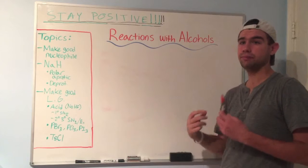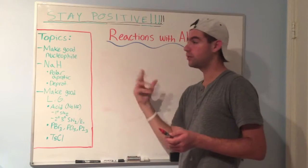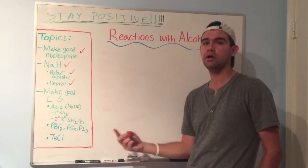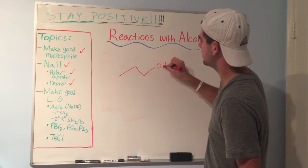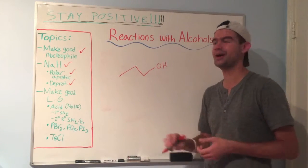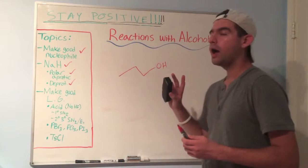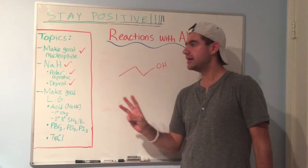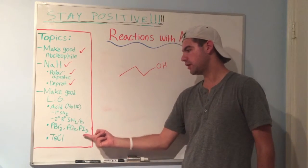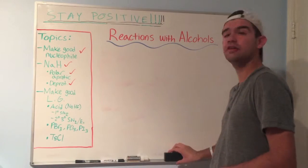Now I want to talk about the second method for making those really happy alcohols reactive. The first method was making them a good nucleophile — we're good with that. Now let's talk about making an alcohol into a good leaving group. We said that an alcohol is a terrible leaving group because if it leaves, it just forms hydroxide, which is an extremely strong base — so that's not going to happen in nature. For your class, you'll probably need to know three ways to make an alcohol a good leaving group: using acid, using PBr3/PCl3/PI3, and using TsCl or tosyl chloride.